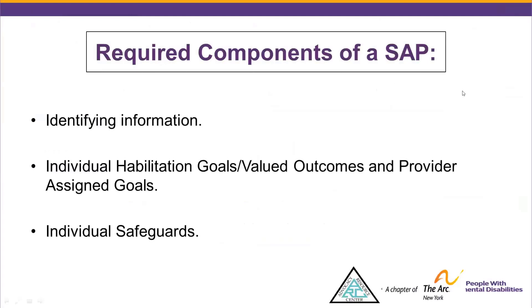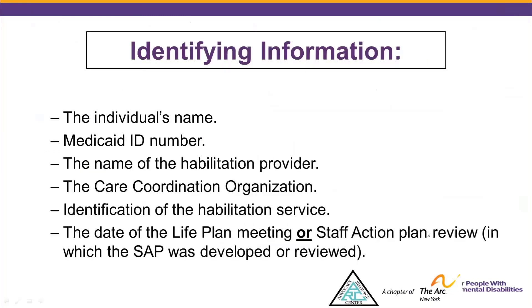The required components include the identifying information, the individual habilitative goals, valued outcomes and provider-assigned goals, and the individual safeguards. The identifying information for the Staff Action Plan encompasses the individual's name, their Medicaid ID number, the name of the habilitation provider, the care coordination organization (CCO), identification of the habilitation service, and the date of the Life Plan meeting or Staff Action Plan review date in which the Staff Action Plan was developed or reviewed.